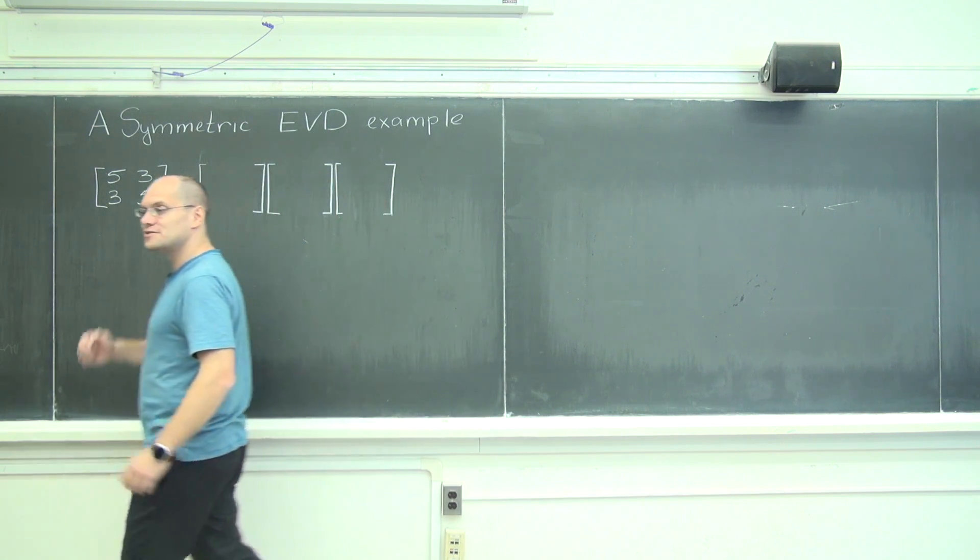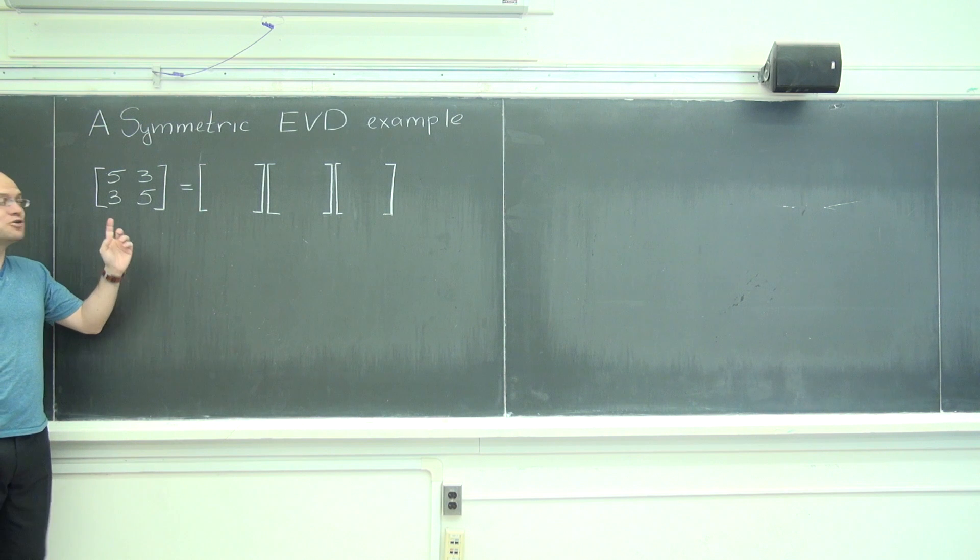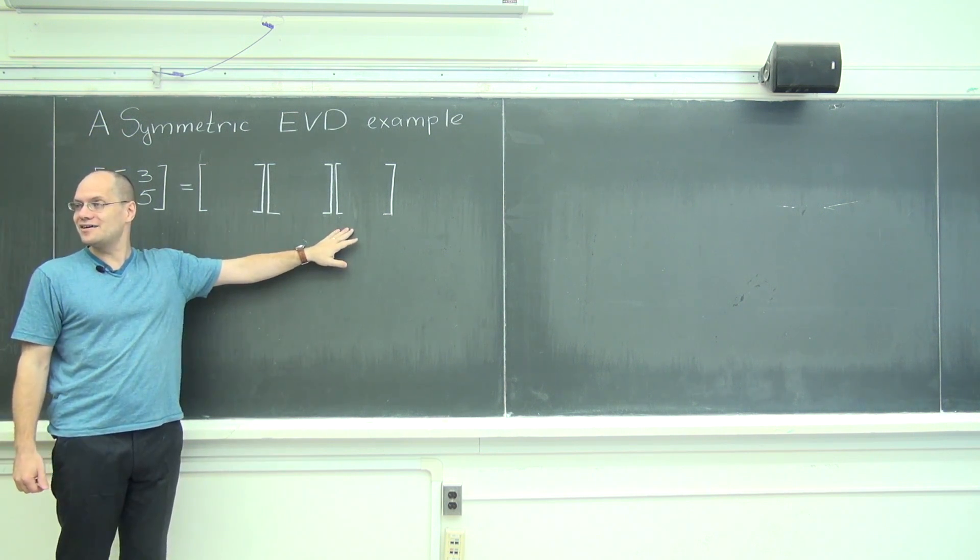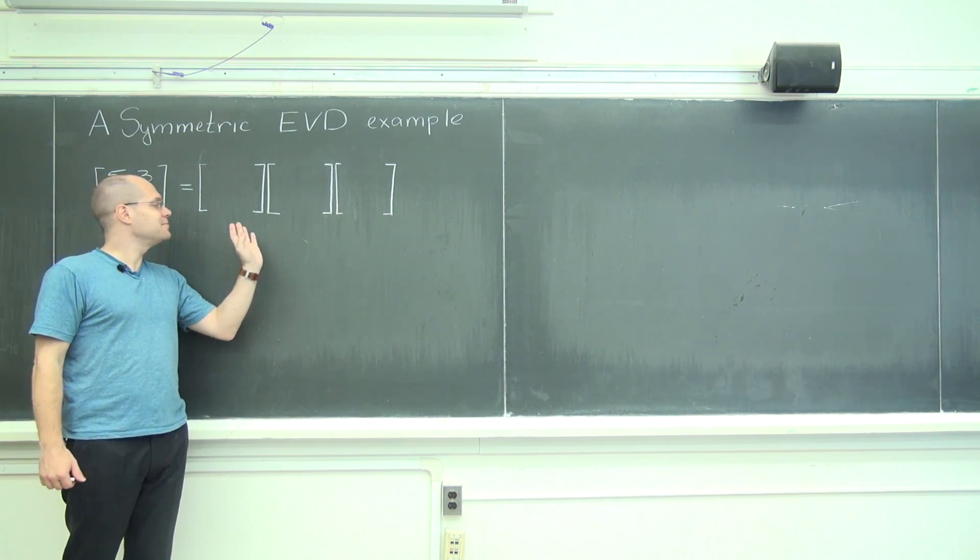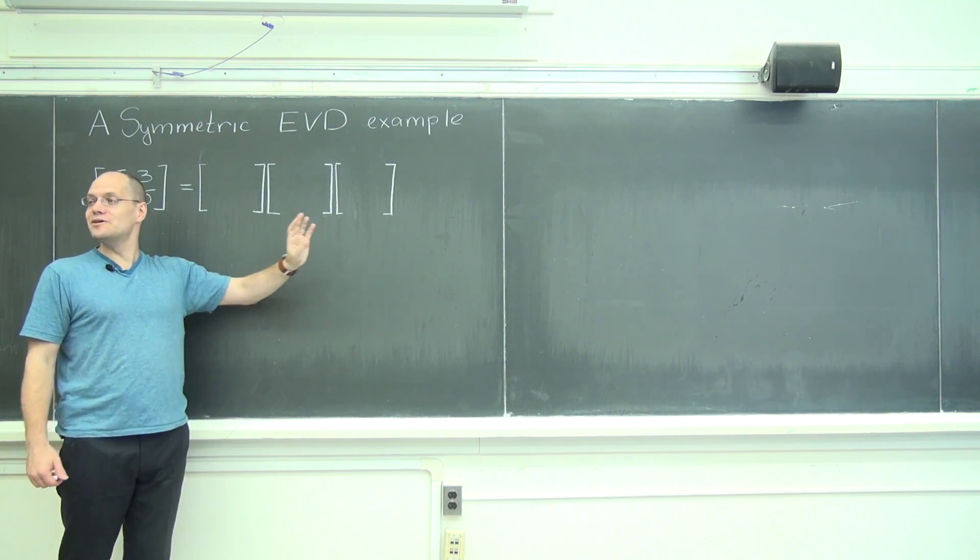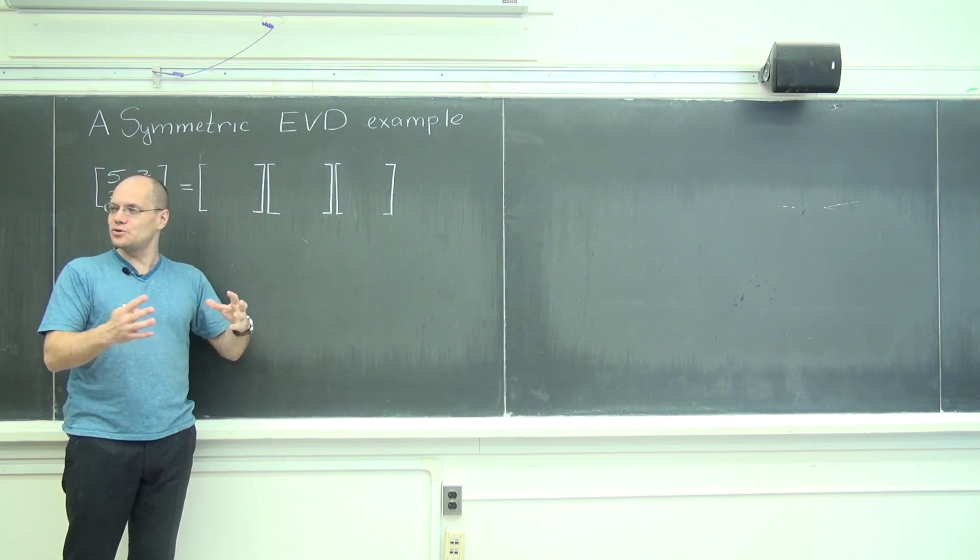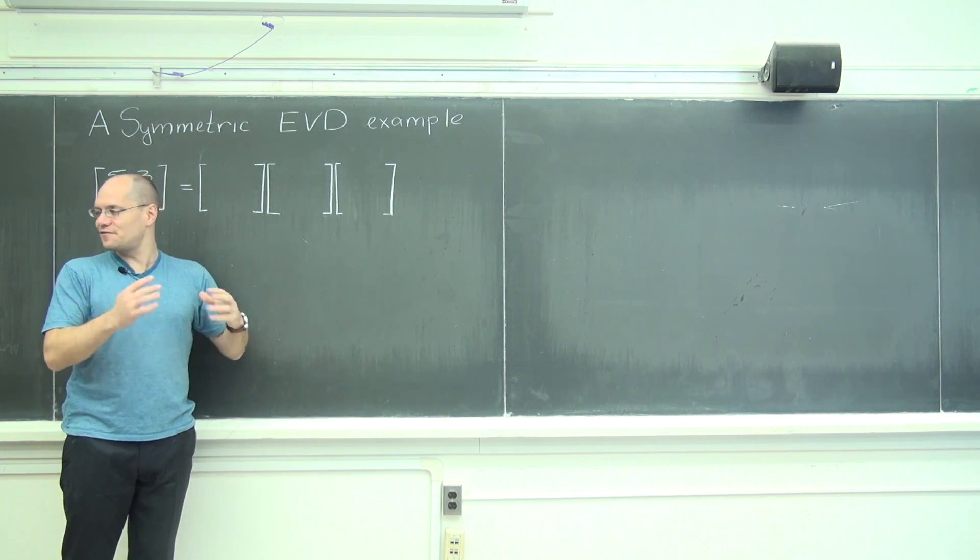So let's begin with this eigenvalue decomposition example of a symmetric matrix. And the only point I really would like to make here is that you can pretty much see the answer without doing any work. It's just a combination of a few very insightful observations.